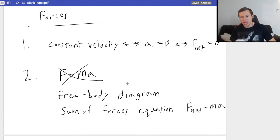you cannot combine the X and the Y axis. In other words, if I have, let's say, F net X here, in other words, all the forces to the right minus the forces to the left, that's equal to mass times acceleration. Again, that's the X component.